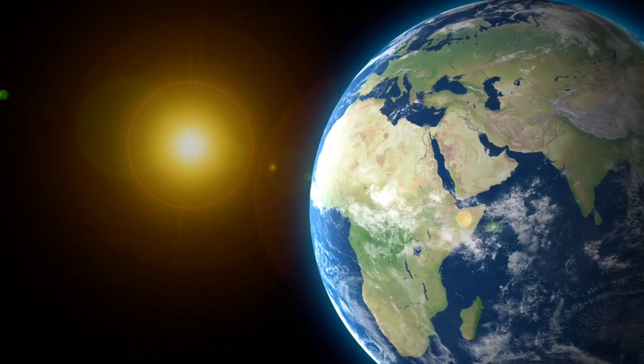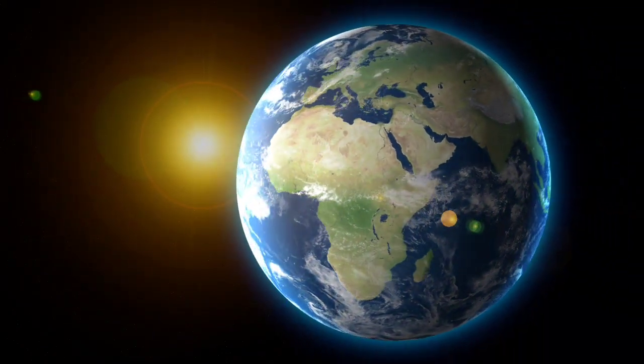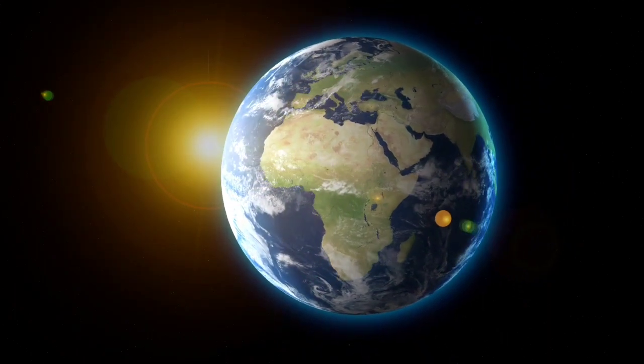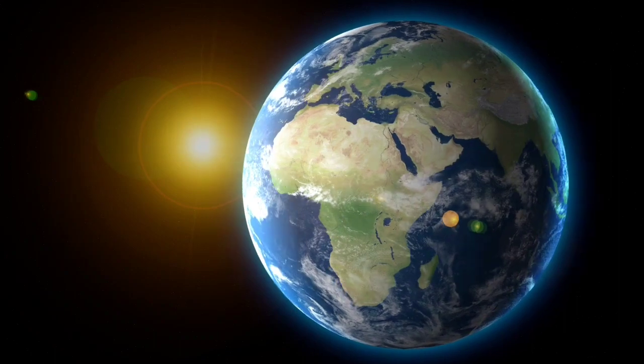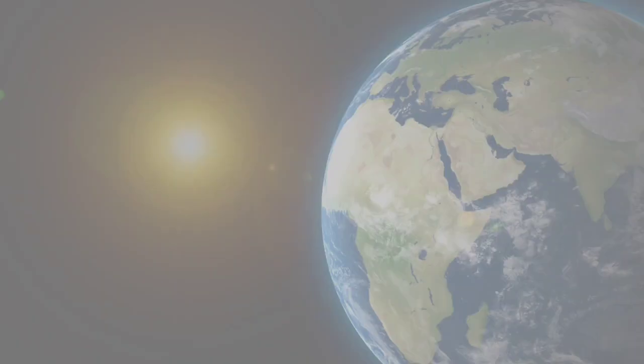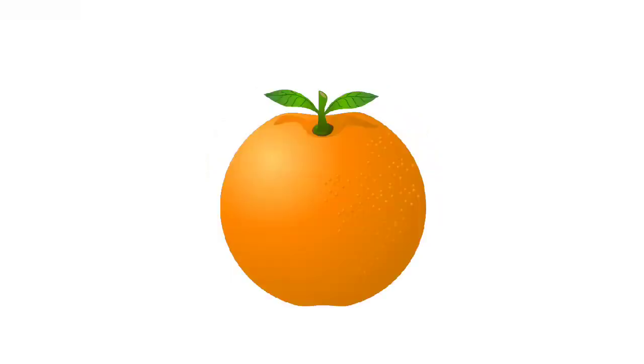Earth is the planet in which we live, and it is the only planet where life exists. You know the shape of the Earth? It is spherical in shape, like a ball, or you can say it is like an orange. You have seen an orange, right? It is bulging at the middle and slightly flat at the top and bottom.